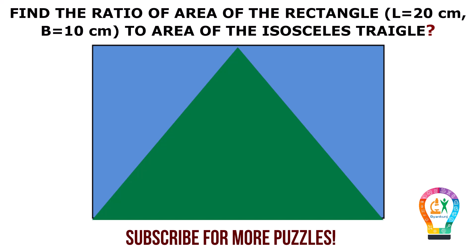In this figure there is an isosceles triangle inscribed in a rectangle. The length of the rectangle is equal to 20 cm and width is equal to 10 cm.